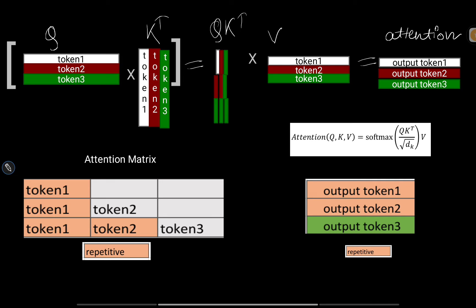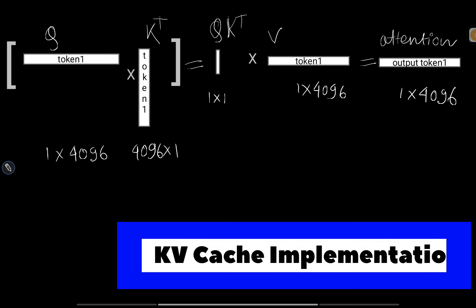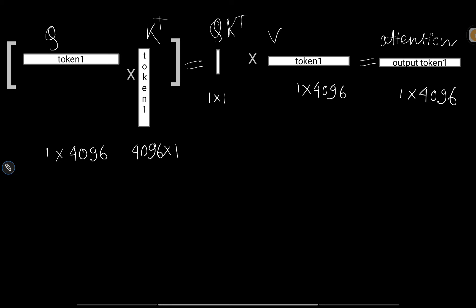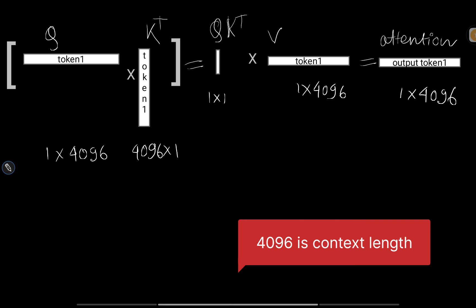So what KV cache does is cache the repetitive computations to reduce multiplication operations and make inference much faster. At the first step, it's the same as before: token one associated with Q, token one with K-transpose, matrix multiplication of one×4096 by 4096×1 gives one×1, multiplied with V (one×4096) to get the attention output of shape one×4096.